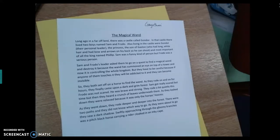So they both set off on a horse to find the wand. As they rode on and on for hours, they finally came upon a dark and grim forest. Sam got really scared, but Frodo was not scared. He was brave and strong. They rode a bit quietly this time, but then they heard a crunch of leaves underneath them. As they looked down, they were relieved because it was only the horse's hooves. As they went down, they rode deeper and deeper into the forest. There were two paths and they did not know which way to go. As they were about to go, they saw a dark shadow. Swiftly approaching through the gloomy branches was a pitch black horse carrying a rider cloaked in an inky cape.